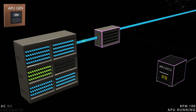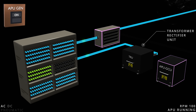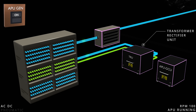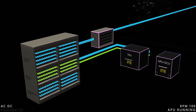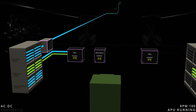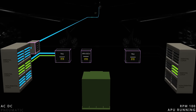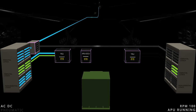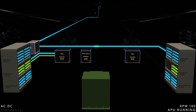To establish complete DC power, the generator output is fed to the transformer rectifier units. The TRUs convert the power and activate the DC buses. The aircraft has two main electrical distribution channels. With only the APU generator available, the load management system will use its power to activate both channels.